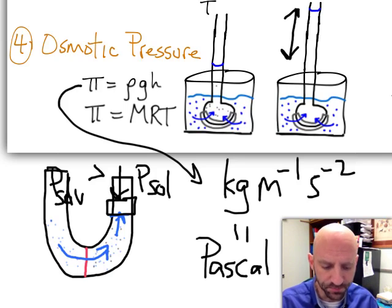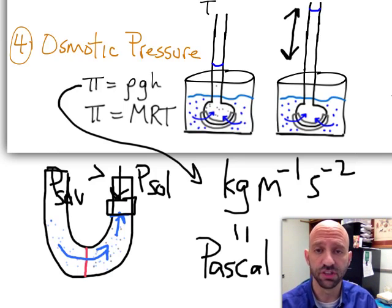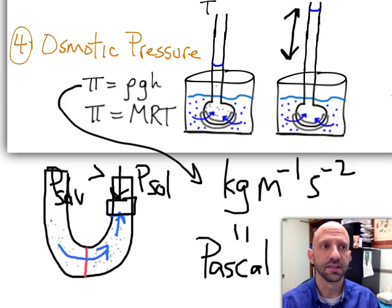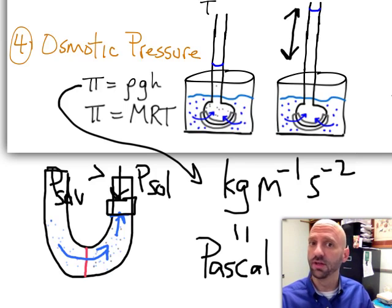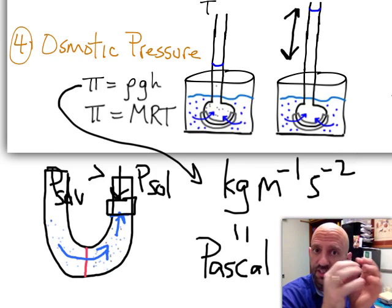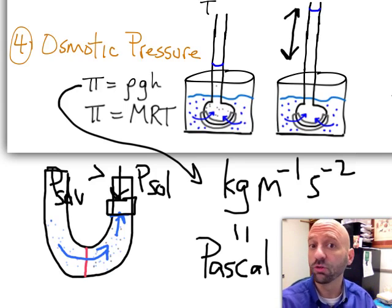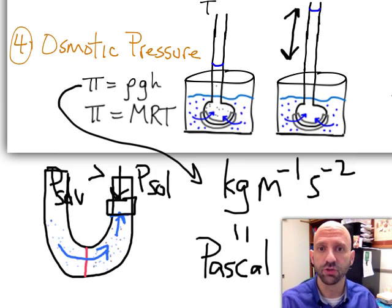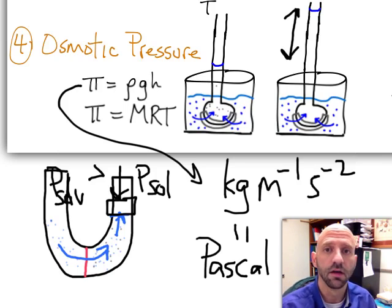So, osmosis is a fairly common phenomenon. You see it in biological systems. You can think about cell structures. If you take a cell and you put it in a salt solution, that cell is going to shrivel up because water is going to leave the cell and go into the surrounding salt solution. So, there are actually some real biological applications to something like osmotic pressure.